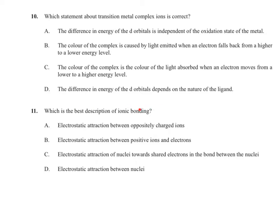Question 11: the best description of ionic bonding is the electrostatic attraction between oppositely charged ions. Attraction between ions and electrons describes metallic bonding. Electrostatic attraction of nuclei towards shared electrons describes covalent bonding. Electrostatic attraction between nuclei would not occur because nuclei are both positively charged.